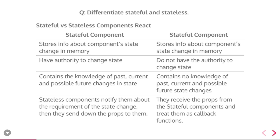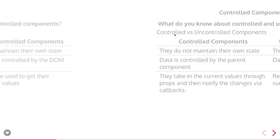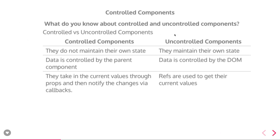A stateless component doesn't have any knowledge about the state — it is just a simple component that has some JSX and renders data from the parent component. Regarding controlled and uncontrolled components: a controlled component does not maintain its own state; the text field's value is populated from this.state.value, so the value is driven by React, controlled by the component and not by the user. An uncontrolled component maintains its own state — like a text field where the value is controlled by the DOM.